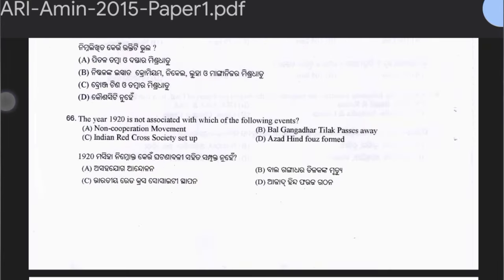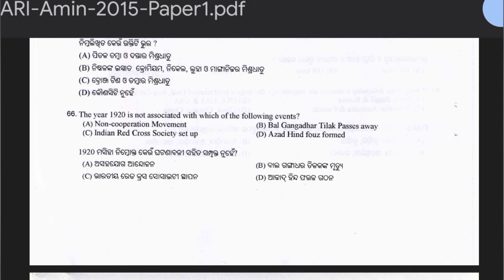Question 66: The year 1920 is not associated with which of the following events? Non-Cooperation Movement, Bal Gangadhar Tilak passes away, Indian Red Cross Society set up, or Azad Hind Fauj formed. The Azad Hind Fauj was formed in 1943, so it is not associated with 1920 — that is the correct answer.